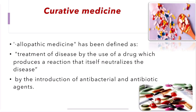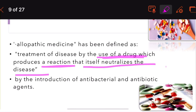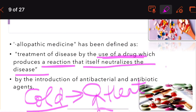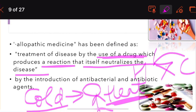Allopathic medicine is defined as the treatment of disease by use of drugs which produce a reaction that itself neutralizes the disease. They produce an opposite reaction — for example, for heat, they give a cold drug, so the cold neutralizes the heat. It produces a reaction which is opposite and neutralizes the effect of the disease.